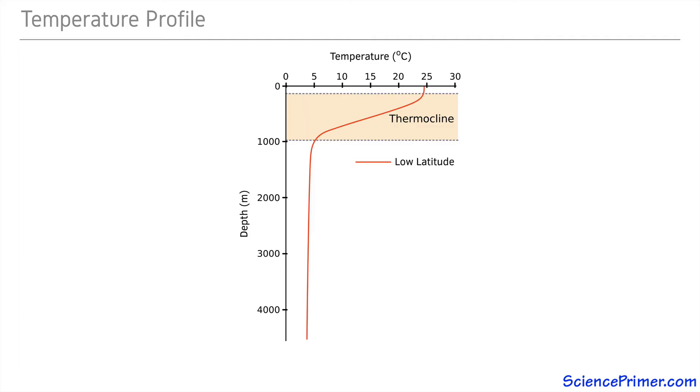As we move poleward and the amount of solar energy reaching the surface of the earth goes down, the thermocline breaks down and temperature from top to bottom in the ocean evens out. Close to the poles, there is little or no temperature difference from surface to bottom.